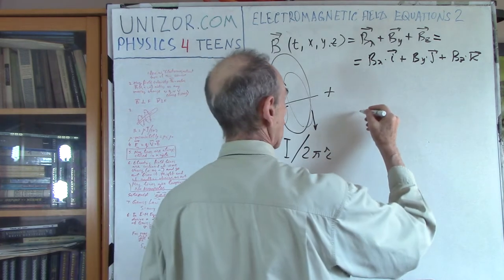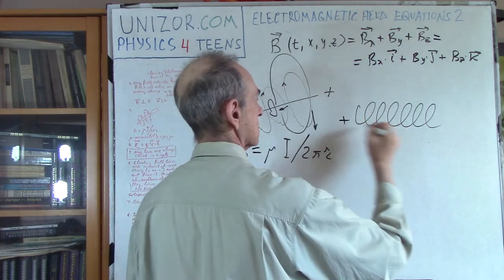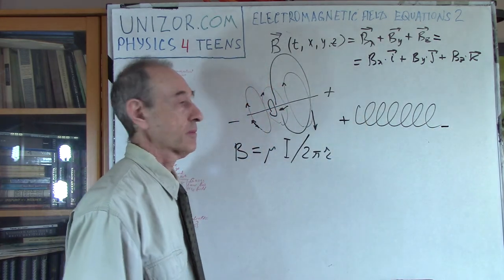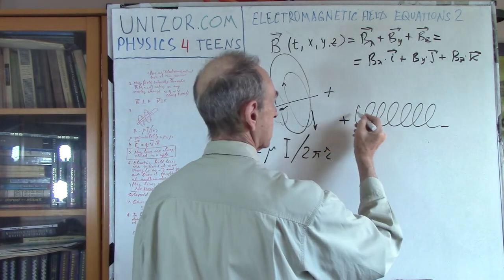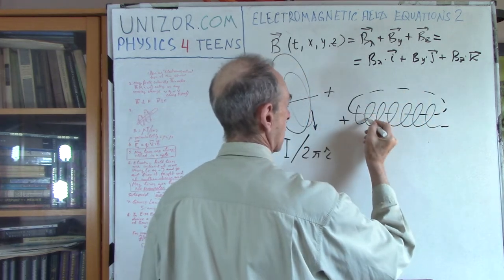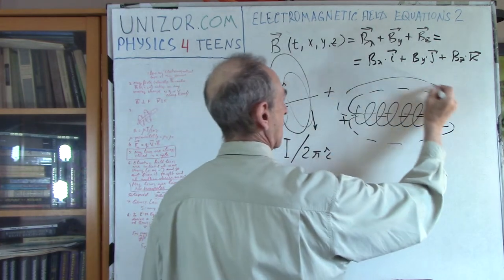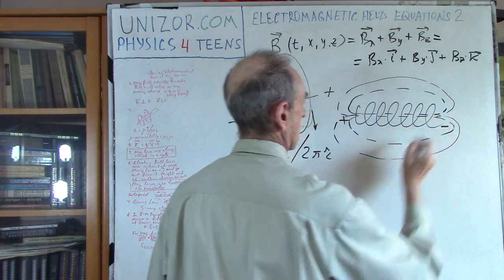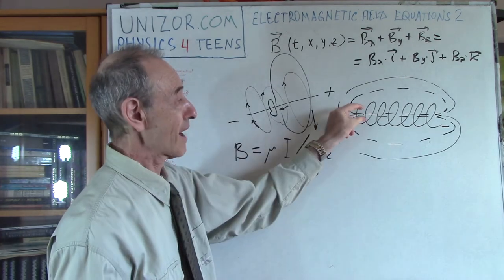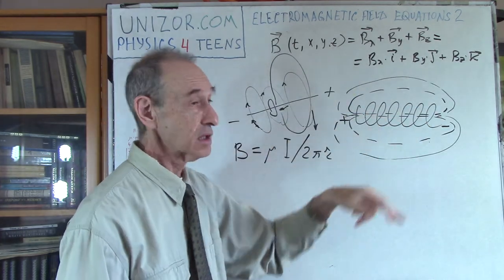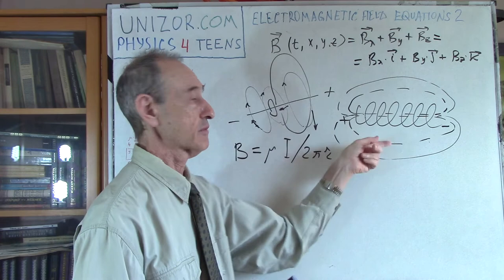Let me give you another example: a solenoid. This is an electric wire which goes like this, and there is a current running in it. The magnetic field lines would actually be like this — they will be weaker the further we are, almost parallel inside, and still closed in some kind of loops. Magnetic field lines do not have a beginning and end.